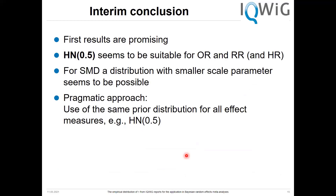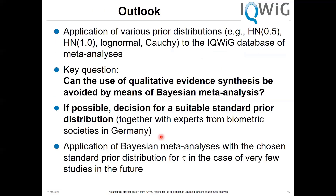The interim conclusion is that the first results are promising. The half-normal distribution with scale parameter 0.5 seems to be suitable for the odds ratio and the risk ratio. For the SMD, a distribution with a smaller scale parameter seems possible, but the pragmatic approach would be to use the same prior distribution for all effect measures — likely the half-normal with scale parameter 0.5. Before making a final decision, we want to check the impact of using different prior distributions, including the log-normal and possibly the Cauchy distribution.